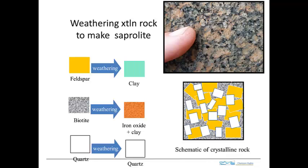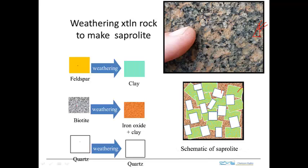The weathering process causes a profound change in the rock. The rocks around here are primarily feldspar, biotite, and quartz — similar to this picture of granite. During the weathering process, the feldspar weathers to clay and the biotite weathers to iron oxide and clay. The quartz doesn't weather much. In the fresh rock, feldspars are a strong mineral giving the rock very high strength.